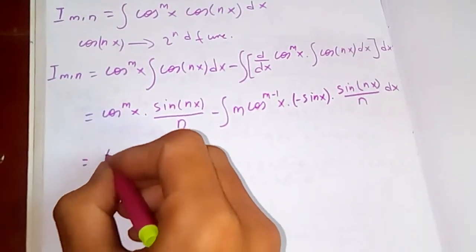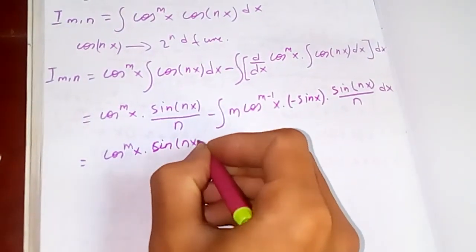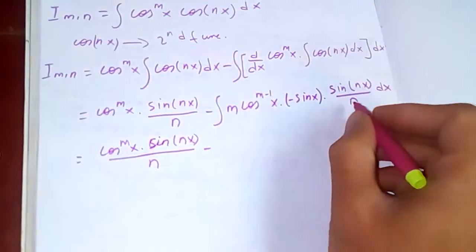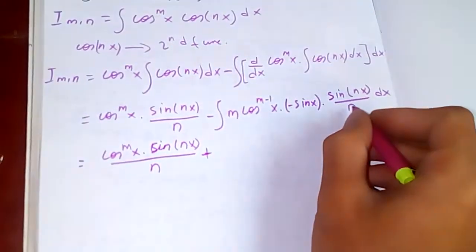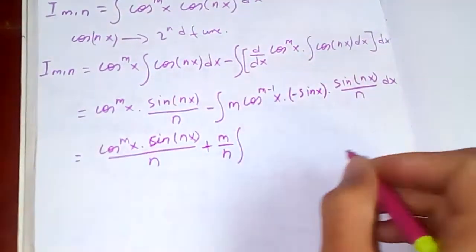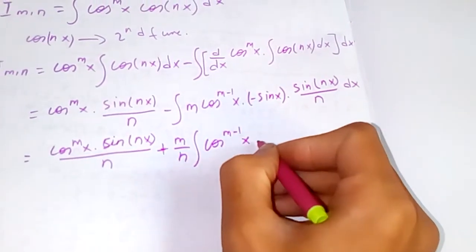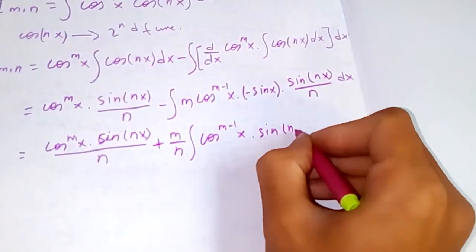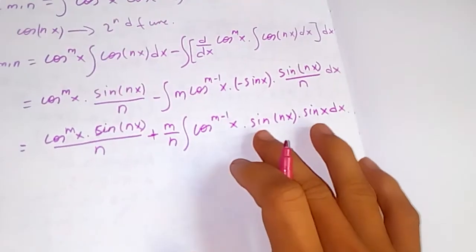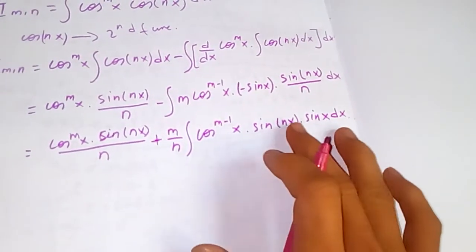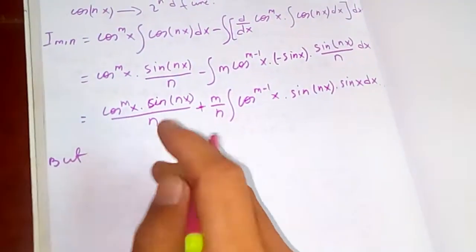This gives us cos^m(x) · sin(nx)/n, minus integration of terms involving cos^(m-1)(x) · sin(nx). Since m and n are constants we can take them out. We now have sin(nx) and sin(x) in the expression, so let's look at a close relation for this.